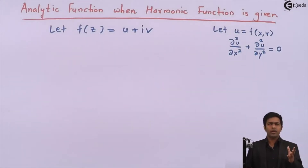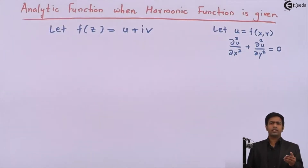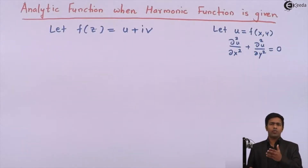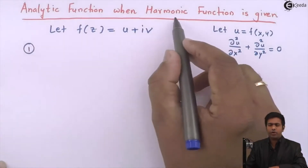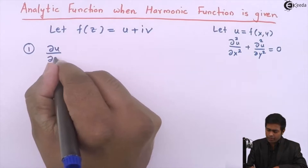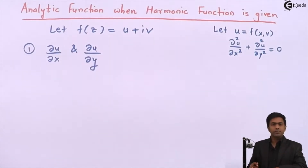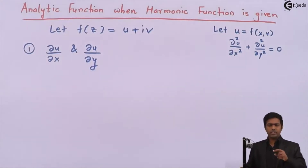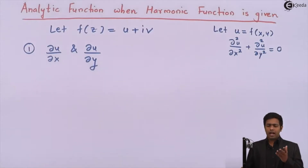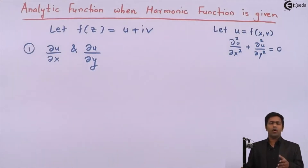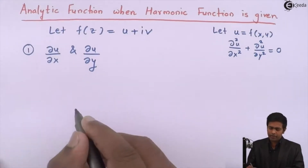Since u and v are conjugate harmonic functions, if u or v is given, we can find their first-order partial derivatives. Step one: if the harmonic function u is given, find ∂u/∂x and ∂u/∂y; or if v is given, find ∂v/∂x and ∂v/∂y. Once we have these values, we can use the property of the derivative of an analytic function.